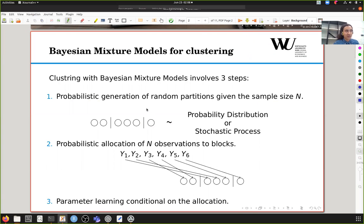Bayesian mixture models involve three steps usually. The first step is a probabilistic generation of random partitions from a probability distribution or stochastic processes and its discretization. The second step is an allocation of observations into these blocks, and the third step is learning of these parameters. The parameters could be those that are specific to each cluster as well as those that are common across clusters that guide the probabilistic generation of random partitions in step one.